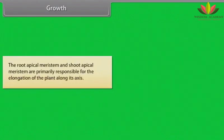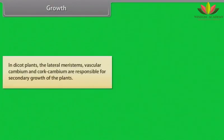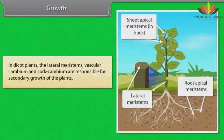The root apical meristem and shoot apical meristem are primarily responsible for the elongation of the plant along its axis. In dicot plants, the lateral meristems — vascular cambium and cork cambium — are responsible for secondary growth of the plants.